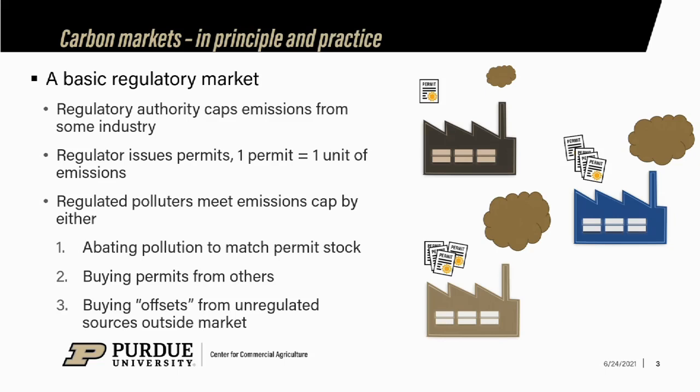In my example, farmers generate some carbon just like everybody else. Farmers might adopt a conservation practice — no-till, cover crops, scale back fertilizer applications. If they can verify and quantify how much carbon is being abated by those activities, they can sell that reduction as an offset to some firm that wants to pay them for it. Any combination of these three activities can be used to meet emissions caps.